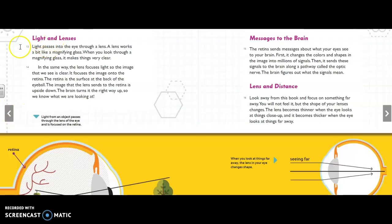So up here we have subheading, light and lenses. Light passes into the eye through a lens. A lens works a bit like a magnifying glass. When you look through a magnifying glass, it makes things very clear. In the same way, the lens focuses light so the image that we see is clear. It focuses the image onto the retina.